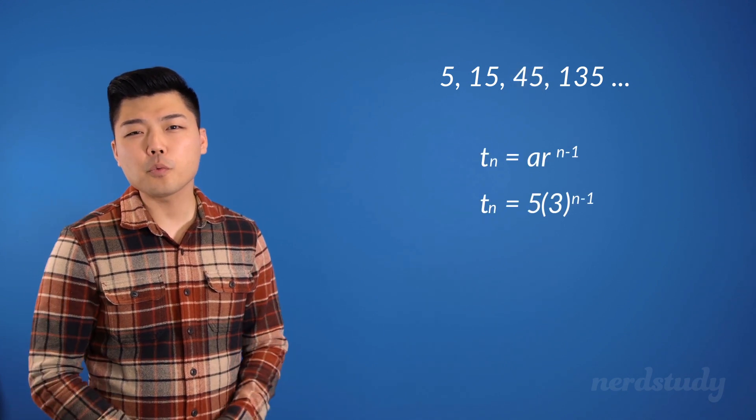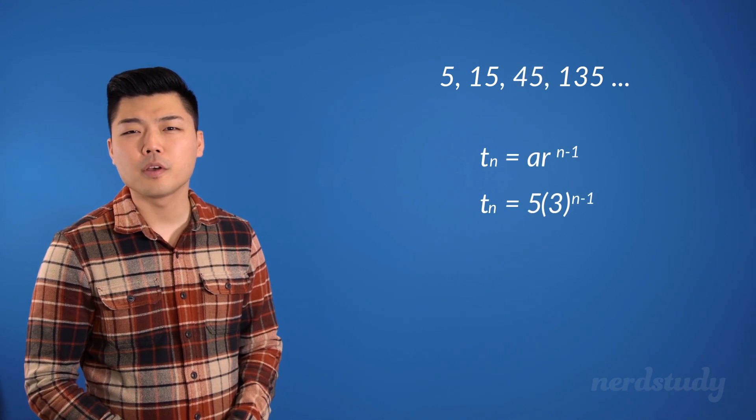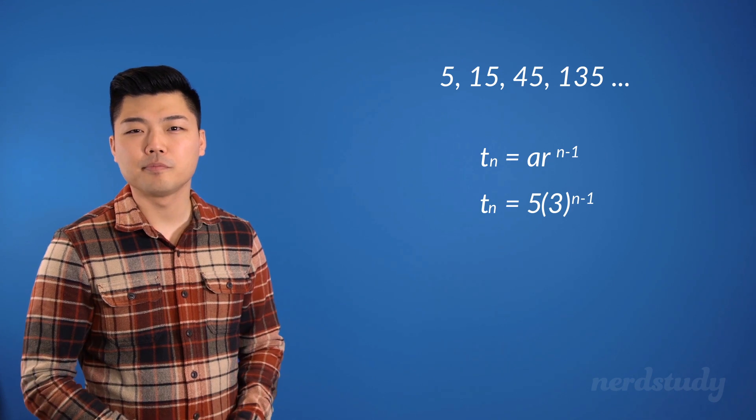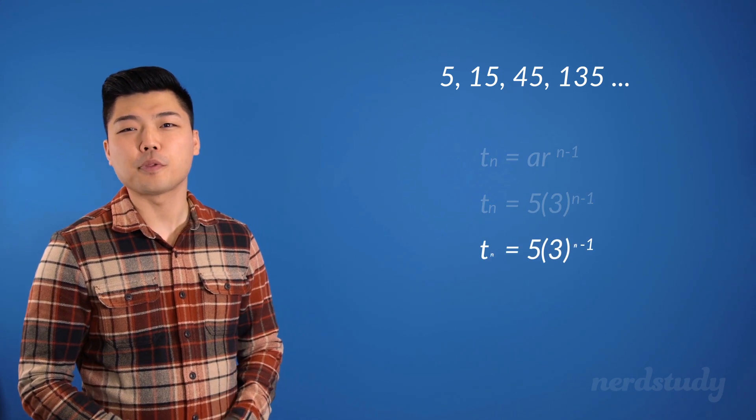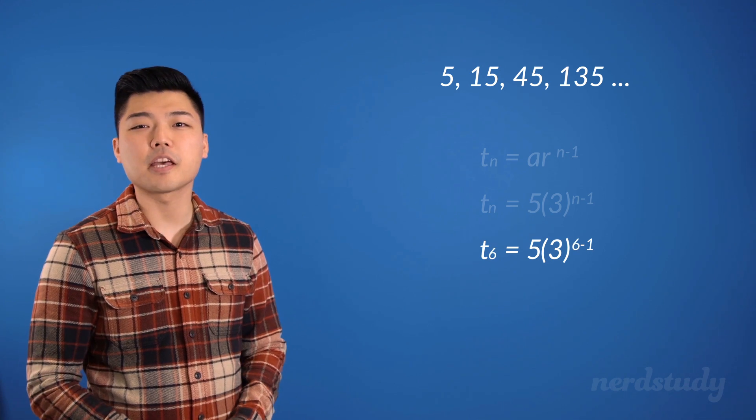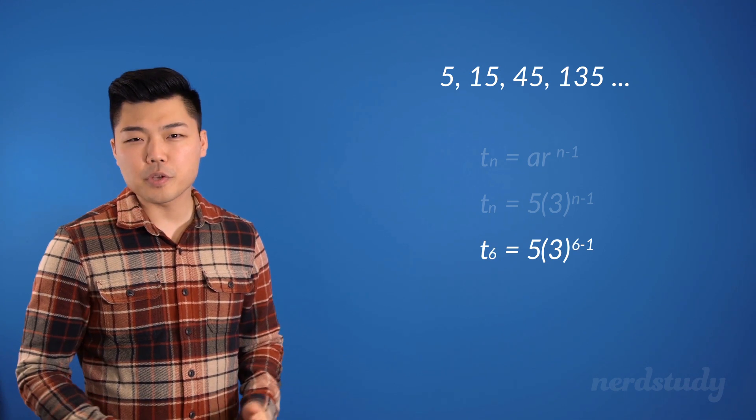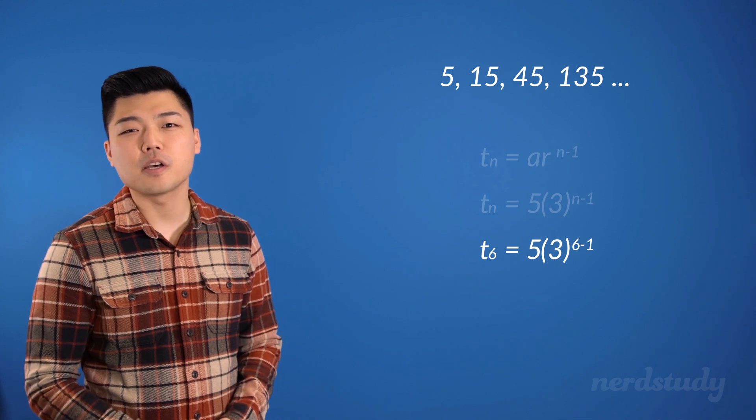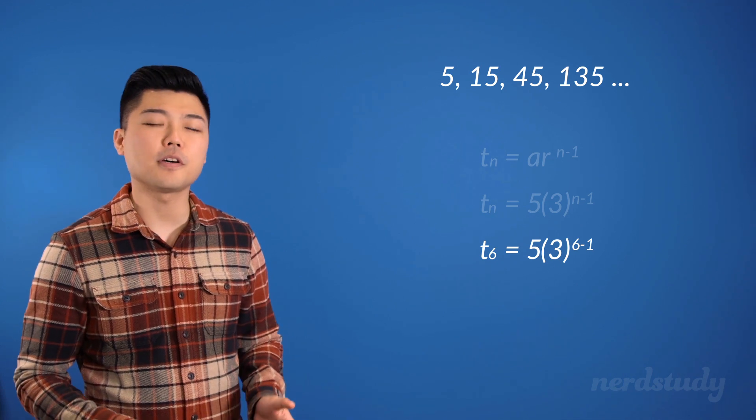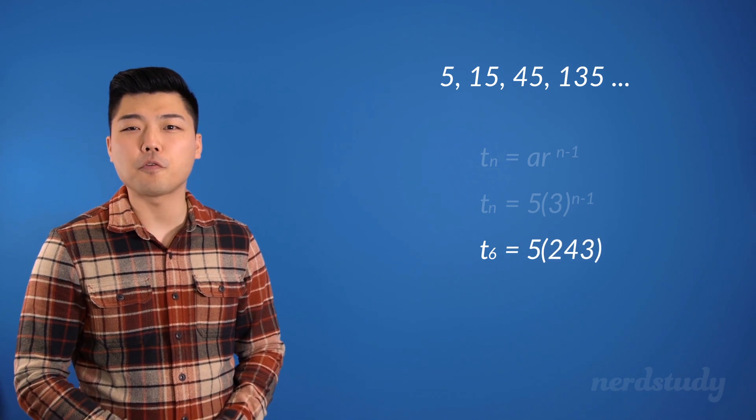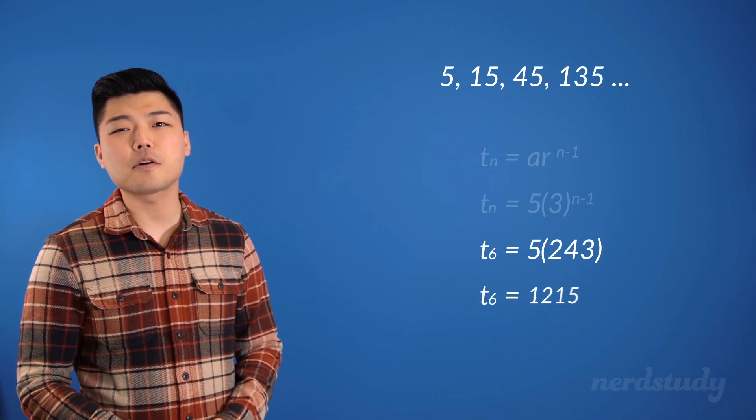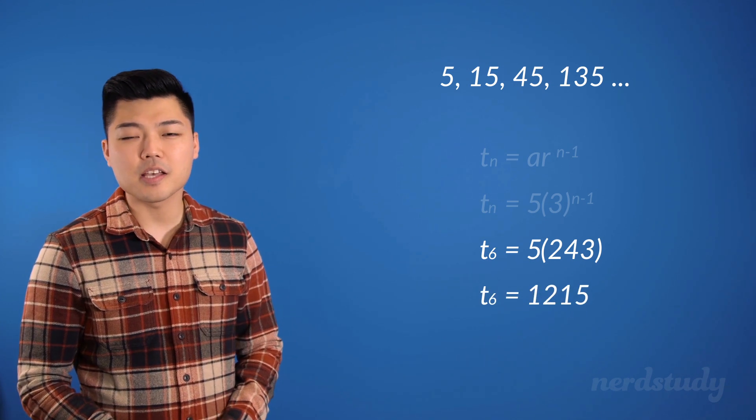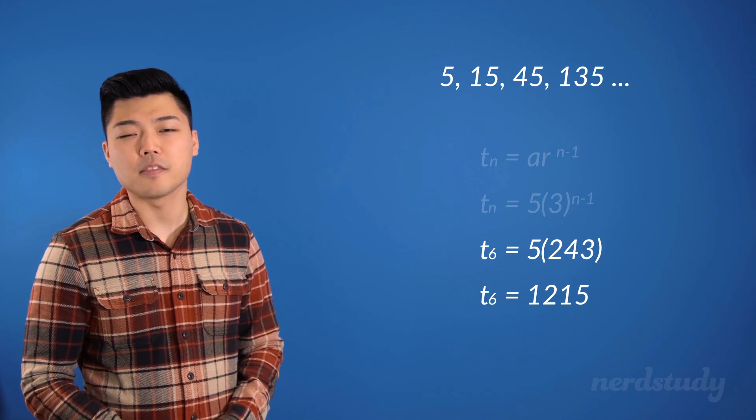And what if we wanted to know what our sixth term was? What would its value be? Well, all we need to do again is plug 6 in for n to get the following. Then we simplify the exponents first and solve for 3 to the exponent of 5 to get 243. And then compute this to get 1215 as the sixth term in this sequence.